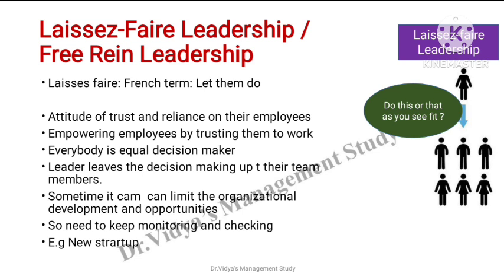Comparing with democratic leadership, lower-level employees participate in decision making but the final decision is taken by the leader. In free rein leadership, team members are given equal chance to take decisions on their own. As seen in the image, the leader says 'do what you feel is fit.' However, this can sometimes limit organizational development. That's why monitoring and supervision are important to ensure employees are making proper decisions. This leadership style is helpful for new startups.